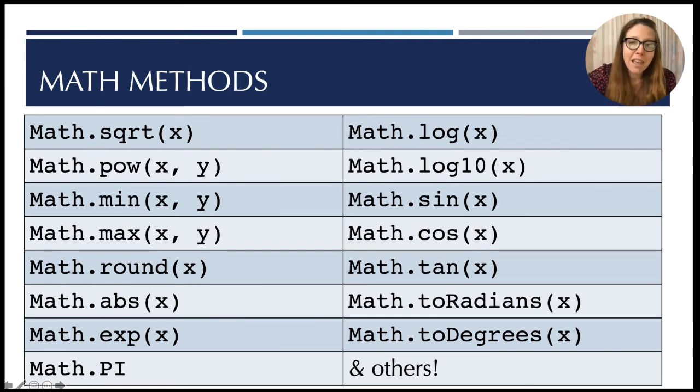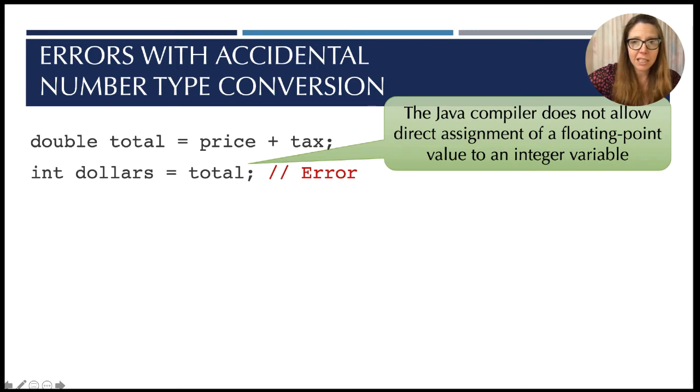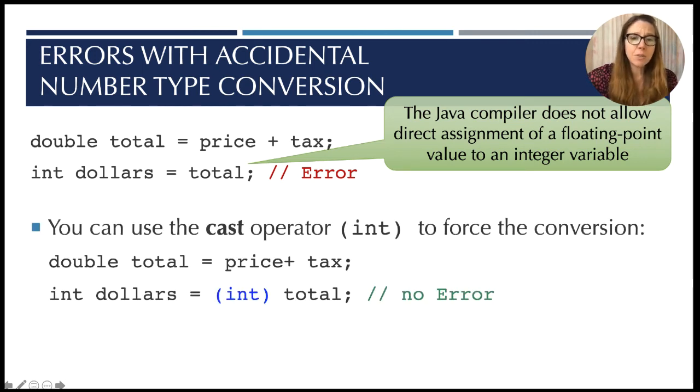We have to be careful when it comes to accidental number type conversion. So you'll see on the first line we have a floating point variable total of data type double, and we don't know if price and tax are double or integer, but that's okay because there's no precision lost as we hold an integer in a double. The problem is when we go the other way. So if we take total, which is a floating point type double, and we try to place that into an integer type dollars, we get an error. In fact, the Java compiler does not allow this - a direct assignment of a floating point value into an integer variable causes an error. So in order to do that you want to use the cast operator, and this forces a conversion.